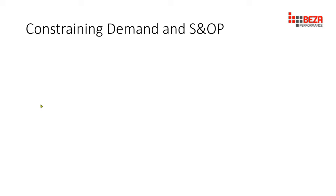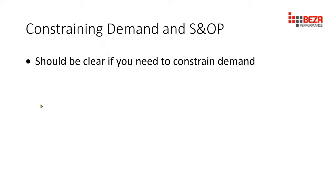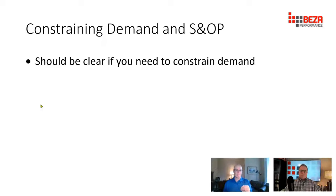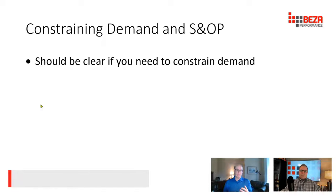In your S&OP process, it should be clear if you need to constrain demand. S&OP doesn't magically fix everything for you, but it sure should make it so that you can't hide from the decisions you have to make. It should be your reality. So it should be clear if you need to constrain demand — that should come out of the S&OP process, and everybody should be in agreement with that.